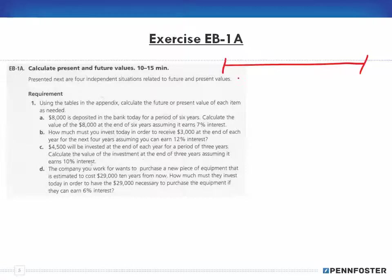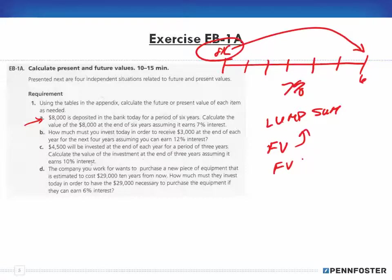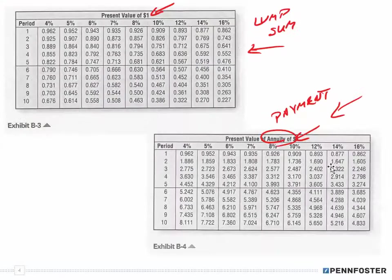For part (a), $8,000 is deposited in the bank today. The timeline goes from today through years one, two, three, four, five, and six. We want to calculate the value of $8,000 at the end of six years at 7% interest. Since I'm depositing $8,000 only once, that is a lump sum, and I want to know its future value — so I'll use the future value of a dollar table.